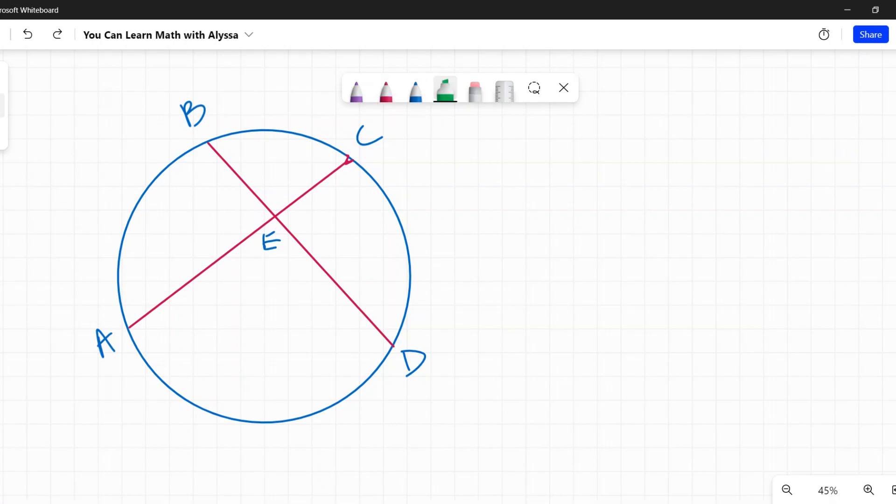First off, let's cover what the theorem itself is. It says that if I have two intersecting chords, and actually I'm going to draw over this in blue so we can see those are two different lines. So I have chord AC, and this chord BD, and they cross at point E.